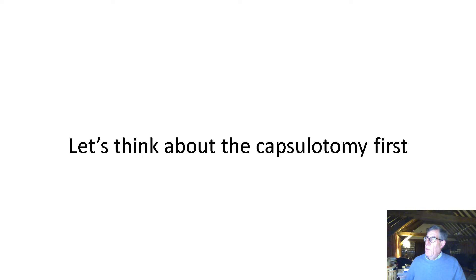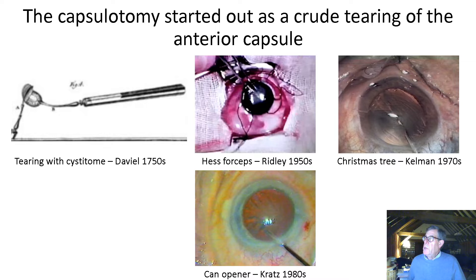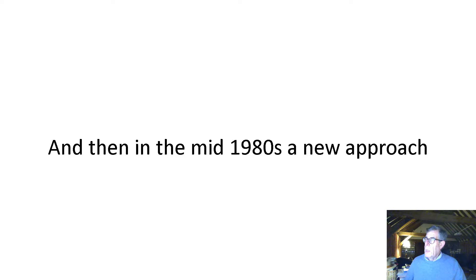Let's think about the capsulotomy first of all. Capsulotomy started out as a crude tearing of the anterior capsule, and we see this with Daviel in the 1750s, with Harold Ridley with his Hess forceps in the 1950s, and with Charlie Kelman with the Christmas tree.